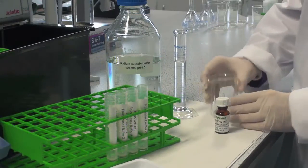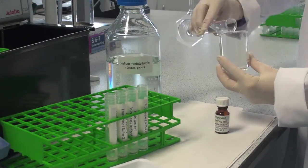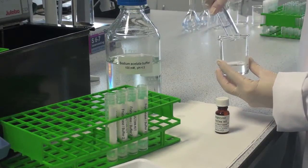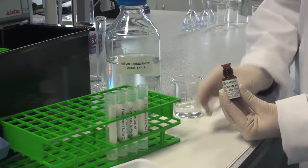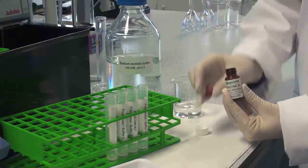Dissolve the contents of vial 2, the fructanase enzyme mixture, in 22 mls of buffer 2, sodium acetate buffer 100 millimolar pH 4.5. This is enzyme solution B.